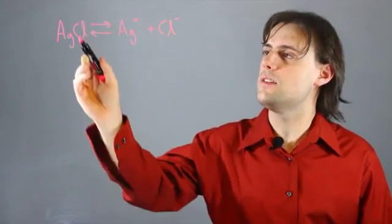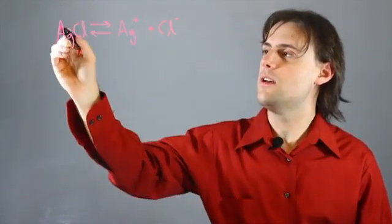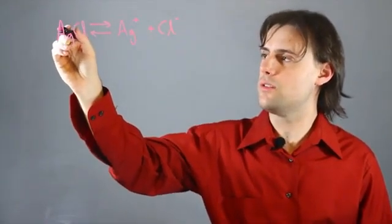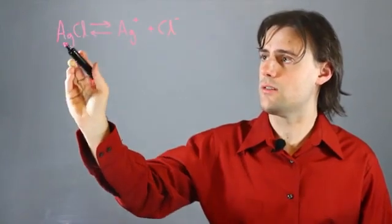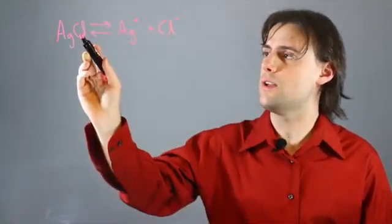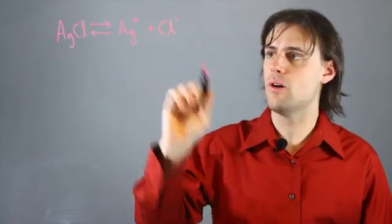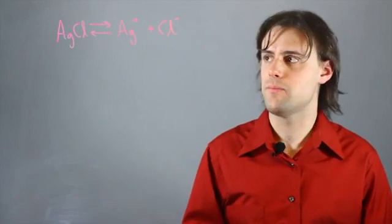We notice that this chemical reaction is balanced in the sense that for every one atom of silver on the left-hand side of the equation, we have one on the right-hand side. And for every one atom of chlorine on the left-hand side, we have one on the right-hand side to match it.